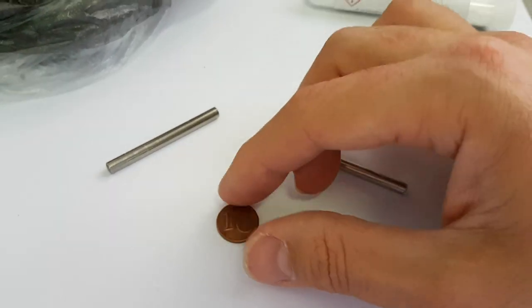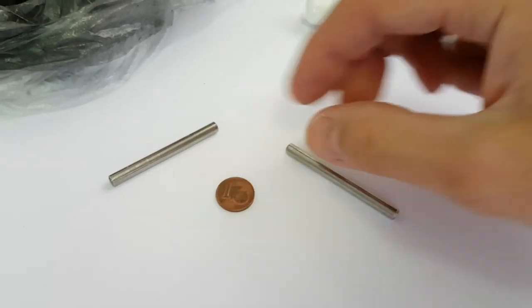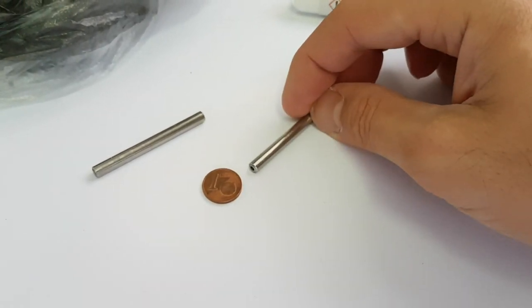And you can see here that here's a European one-cent coin for scale, so you can get an idea of how large this is.